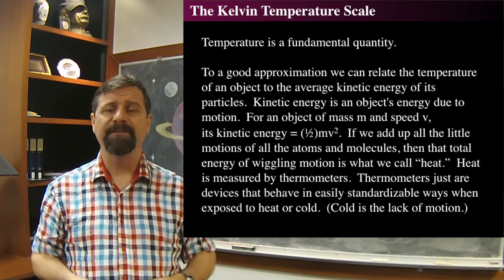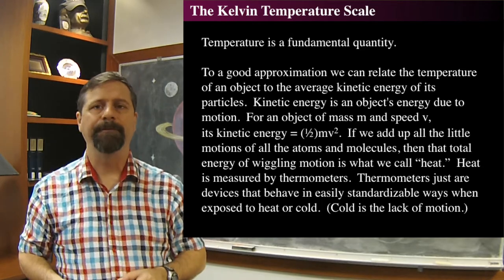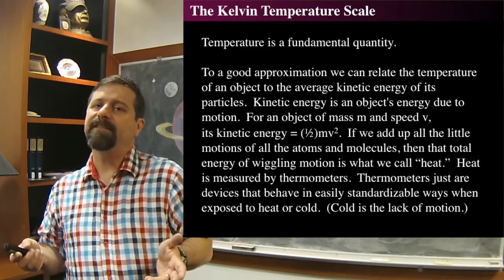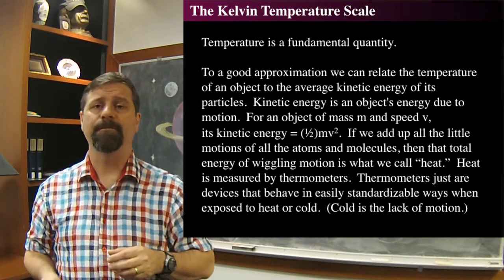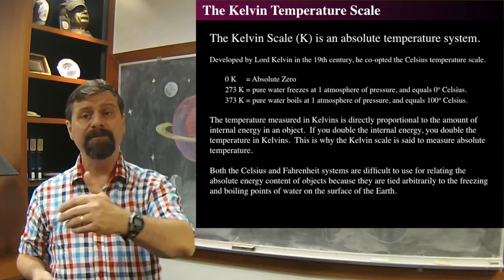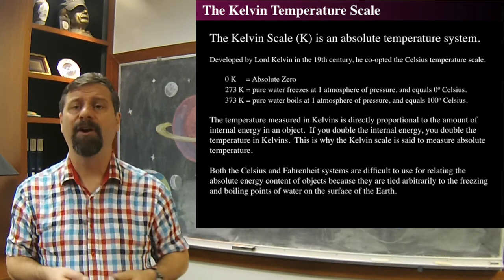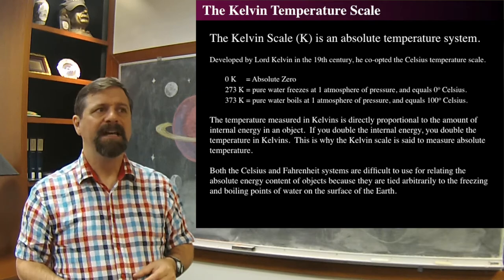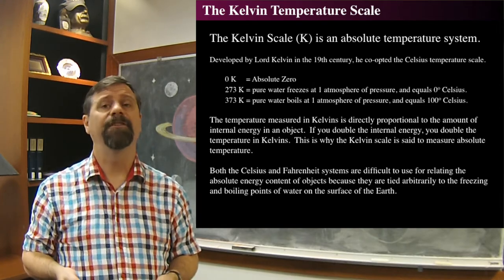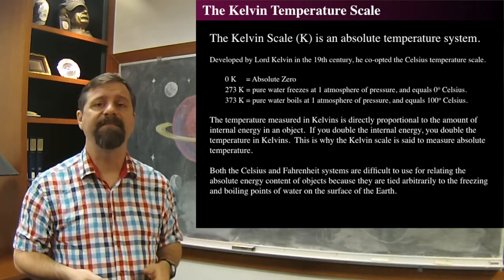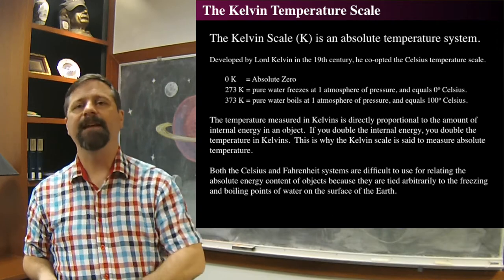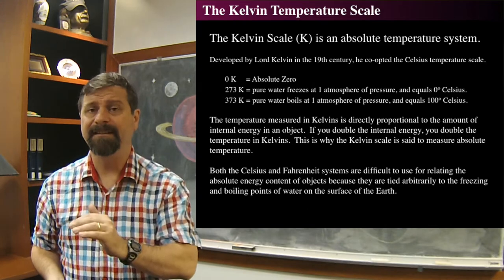We can relate temperature to the average kinetic energy of an atom. That movement is what we call heat. Temperature is something you measure with a thermometer. Heat is a measurement of how much wiggling is occurring inside the atoms. Cold can be defined as the lack of motion, so an absolute temperature scale has temperature equals zero as absolutely cold. As you add more heat, things move faster and faster, and temperature gets higher. The Kelvin temperature scale was defined by Lord Kelvin — zero is absolute zero, where there is no motion whatsoever.